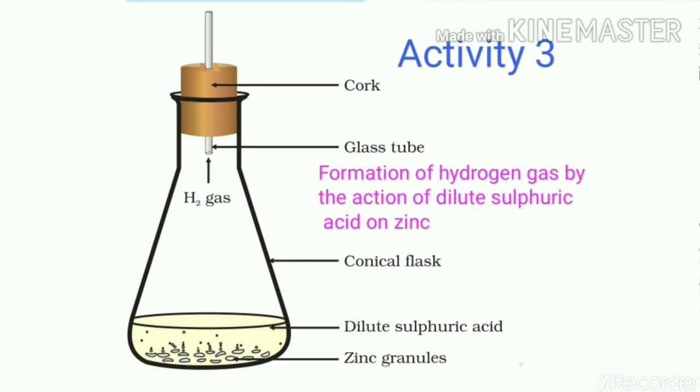We will observe evolution of a gas from the glass tube, and as we touch the conical flask or test tube, the temperature of the conical flask is increased. So, this observation of evolution of a gas and change in the temperature of reaction mixture helps us to determine that here a chemical reaction has taken place.